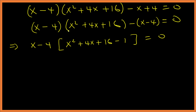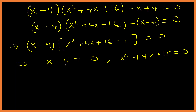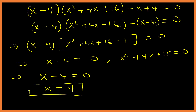So we have (x minus 4)(x squared plus 4x plus 15) equals 0. Applying the zero product property: x minus 4 equals 0, therefore x equals 4. That is the first solution.